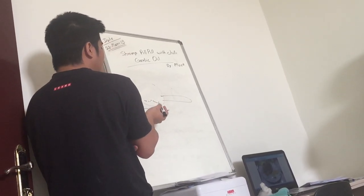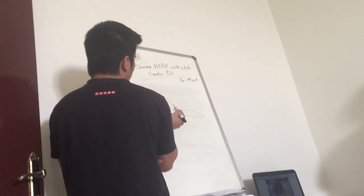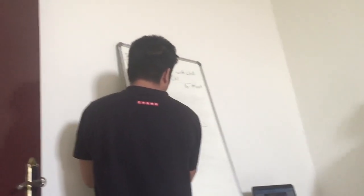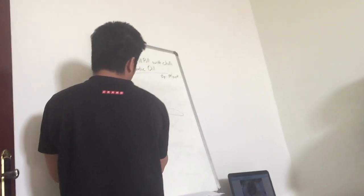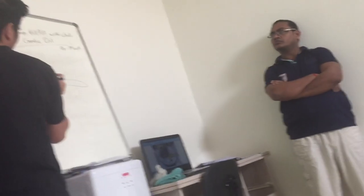And after that you put the shrimp. This is the shrimp, sorry for my drawing. This is the shrimp, and this is the green chili.